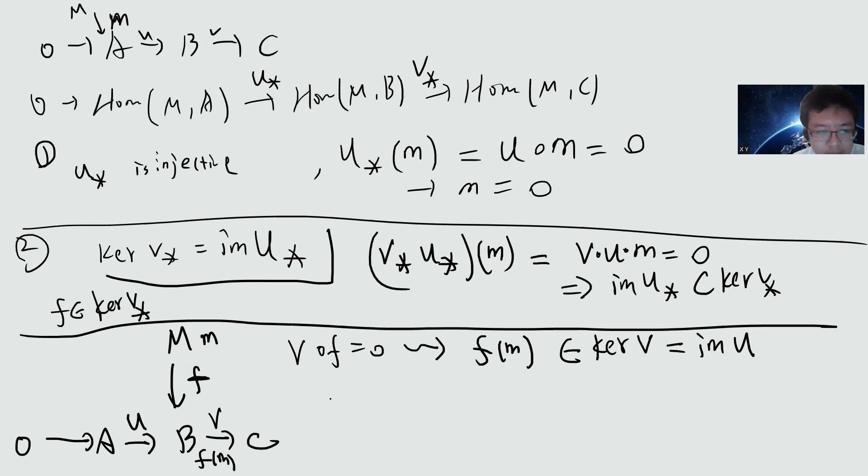So this tells me that for any m, F(m) is inside the kernel of V. But I know that kernel V is the image U by my construction. So I can find an element a such that U(a) is the same as F(m). But U is injective, so a will be unique. So now very simple, I can define another map, let's call it G. I can define G(m) to be just a. So obviously G(m) equals a, then U(a) will be F(m). So the diagram will commute. This tells me that this G is well defined and it's unique.